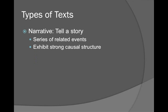Narrative texts, on the other hand, tell a story. This can be books you read for fun, or online articles explaining what happened — anything with a structure of related events. That's strong causal structure. It tends to be more interesting, and people like narrative texts better.